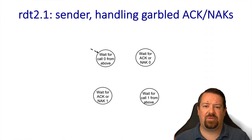Our RDT 3.0 sender has the same four states as before — two states for packet 0 and two states for packet 1. The change with 3.0 is that we now start a timer when performing the send action. If the ACK comes as expected, then we can stop the timer. When waiting for an ACK, we now have a new event: the timeout, meaning when the timer expires. In this case, we send the packet again and start the timer again. We also have the event where a corrupted acknowledgement is received, or where we receive an ACK for the wrong packet. In those cases, we don't have to take any action because we can just wait for the timeout.